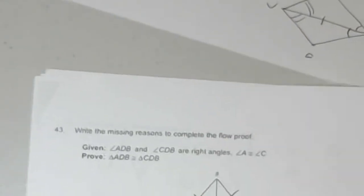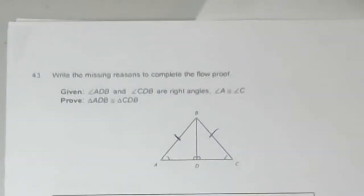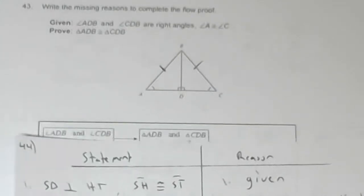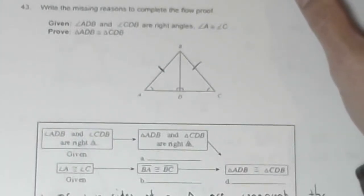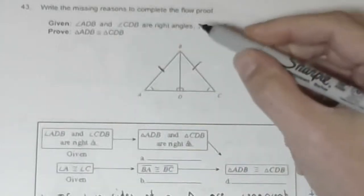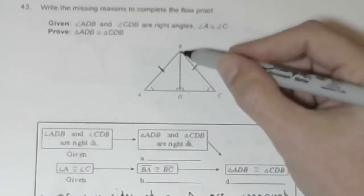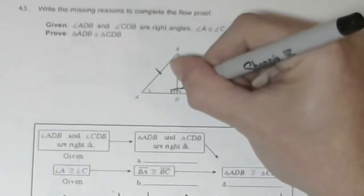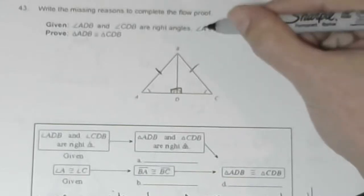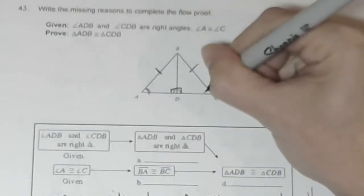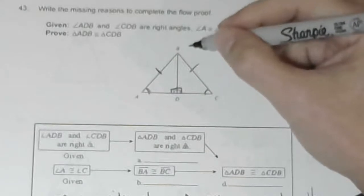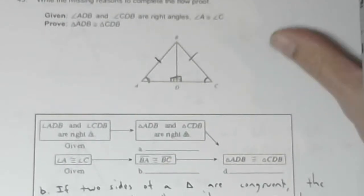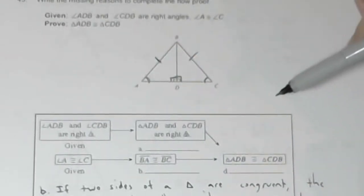We are starting with problem 43. Write the missing reasons to complete the flow proof. Given angle ADB and angle CDB are right angles, and angle A equals angle C. Prove triangle ADB is congruent to triangle CDB. They've given us statements in flowchart form.